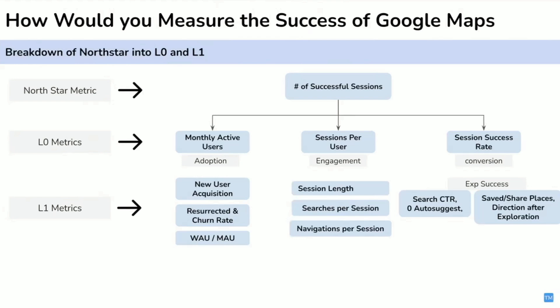Similarly, for navigation success, we track on-time arrival. If Google Maps is showing the right path and has accurate traffic information, you will arrive on time. So we measure ETA accuracy. Another key metric is direction abandonment rate — this will also be one of the key metrics for navigation success.